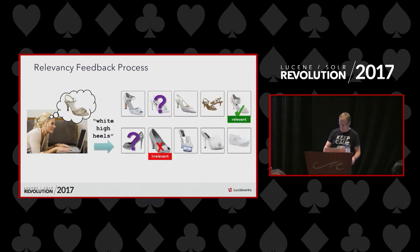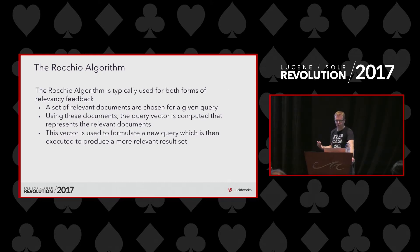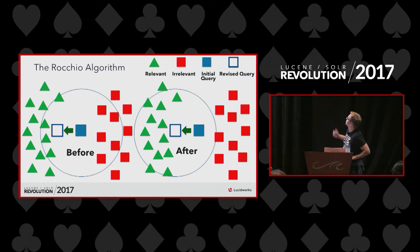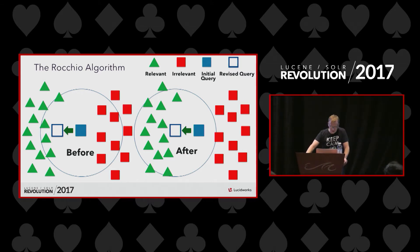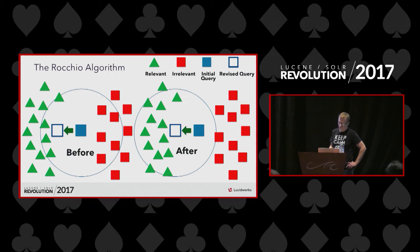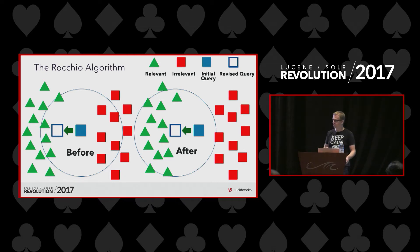Here's a visual diagram to explain this process. The Rocchio algorithm is typically used for both forms of relevancy feedback. Given a set of relevant documents for a query, we use these documents to compute a query vector — computed in such a way that it is much closer to the relevant documents than the original query was — and then we use this vector to formulate a new query. On the left there you have the initial query (the blue box). The results within the circle were returned; the green triangles are the relevant documents, the red squares are the irrelevant documents. We take that query, modify it and move it in the semantic vector space closer to the relevant documents and further away from the irrelevant ones. On the right we re-execute the query and get more green triangles and fewer red squares.